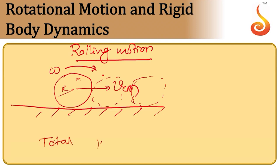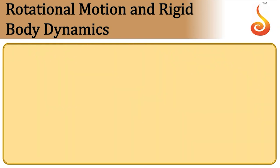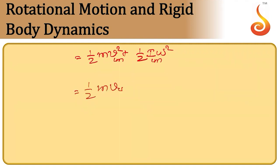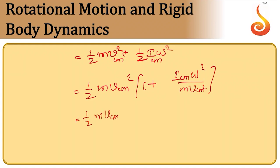Assume a body is rolling at constant angular velocity ω, with radius r and mass m. It has two components: translational velocity of the center of mass and rotational motion. So the total kinetic energy comprises translational kinetic energy (1/2)mv² plus rotational kinetic energy (1/2)Iω², where I is measured about the center of mass.